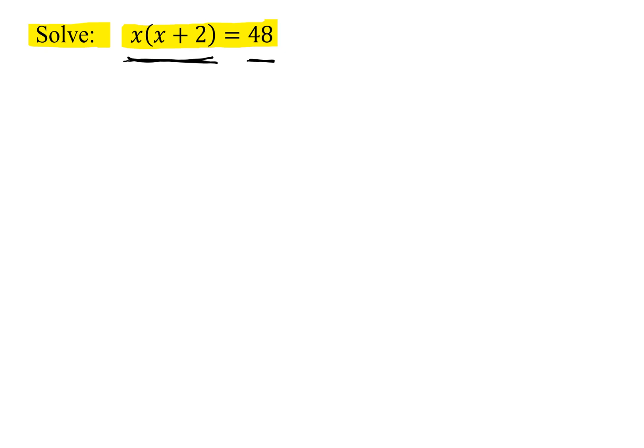Now, is that true? If two numbers multiply to 48, does one of them have to be 48? No. That only works if this number here happens to be 0 because it's called the zero product property. Two numbers multiply with each other to give 0, you know at least one of them has to be 0.